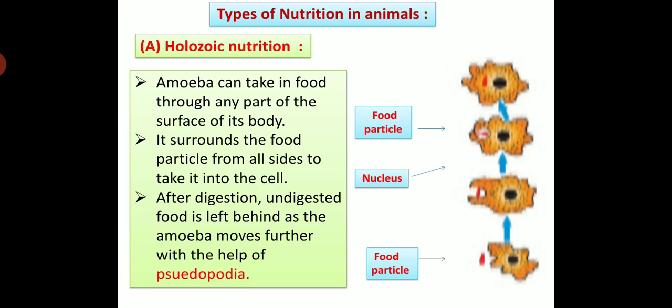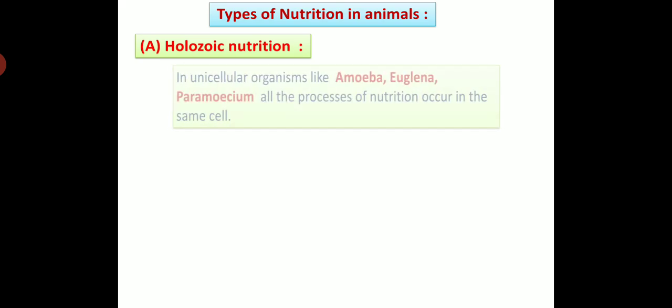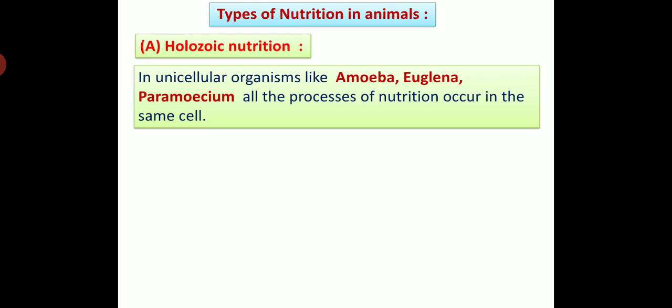Amoeba surrounds the food particle from all sides to take it into the cell. In the first step, the food particle is near the surface of its body. In the second step, it is surrounding the food particle. In the third step, food is taken into the body. After digestion, undigested food is left behind as amoeba moves further with the help of pseudopodia. In unicellular organisms like amoeba, euglena and paramecium, all the processes of nutrition occur in the same cell.